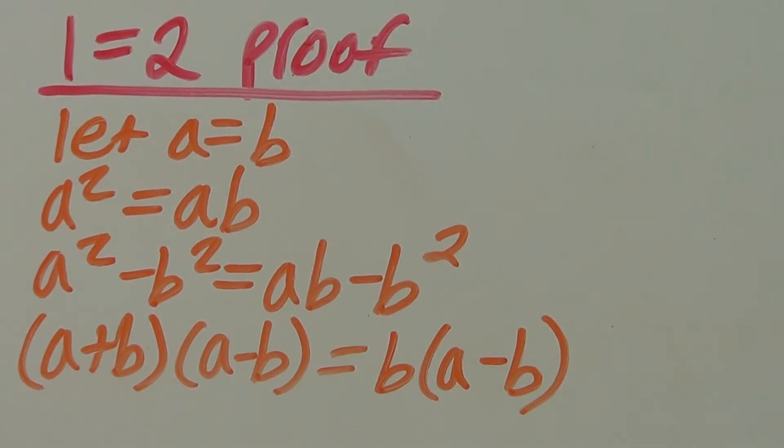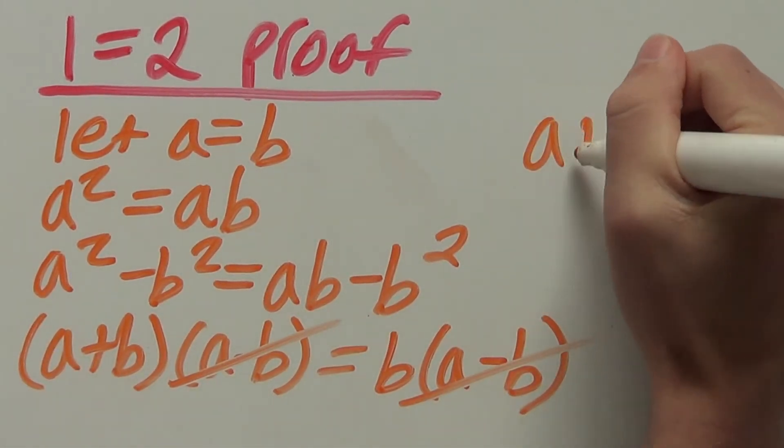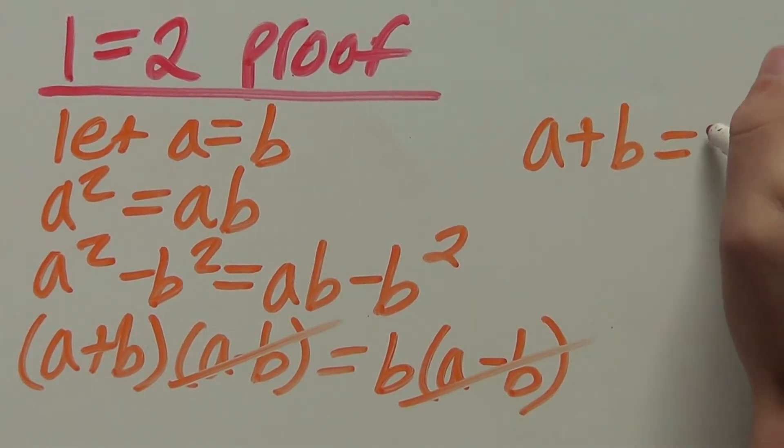Next up we can see we have a minus b on both sides so we can cancel them out, which leaves us with a plus b equals b.